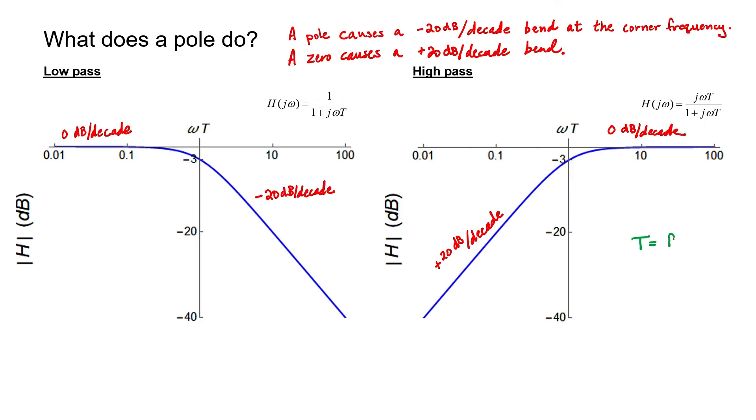You might have noticed that we have some design freedom. If we intend to design a filter to have a certain corner frequency, that corner frequency is a function of RC. Should we choose a large resistor and a small capacitor, or a large capacitor and a small resistor? In the next video, I'm going to look at this question in more detail so that you can make smart design decisions when designing your filters.